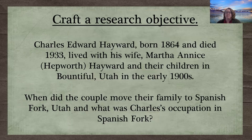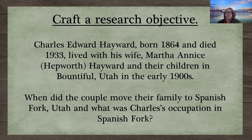The first step in any successful research is to decide what you'd like to know and then craft a research question or research objective. My original research objective was: Charles Edward Hayward, born 1864 and died 1933, lived with his wife Martha Annis Hepworth Hayward and their children in Bountiful, Utah in the early 1900s. When did the couple move their family to Spanish Fork, Utah, and what was Charles's occupation there?